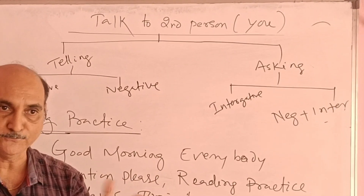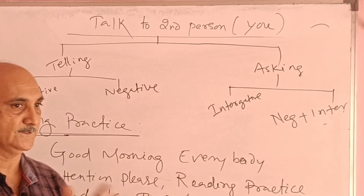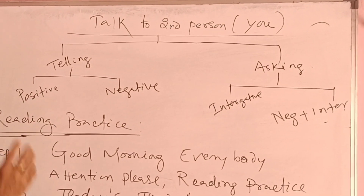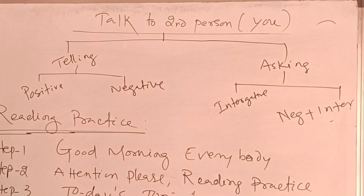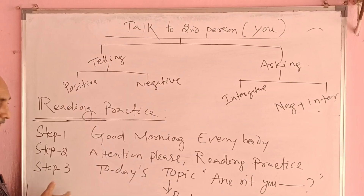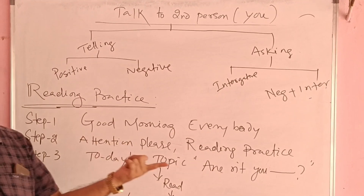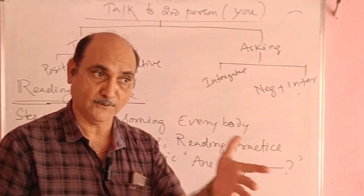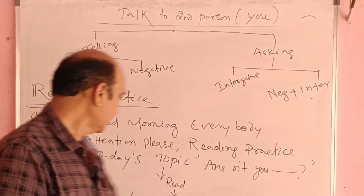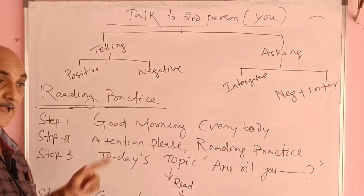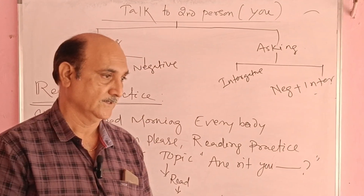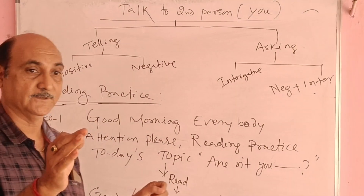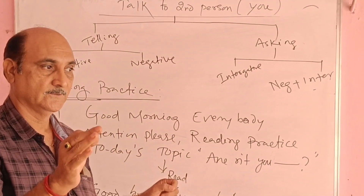Here I have told you to write five sentences. You will come here one by one and read. These are the steps while reading: step number one, you will say 'Good morning everybody,' and the reply will be 'Very good morning.' Next, step two: 'Attention please, reading practice.' And after that you will say today's topic.